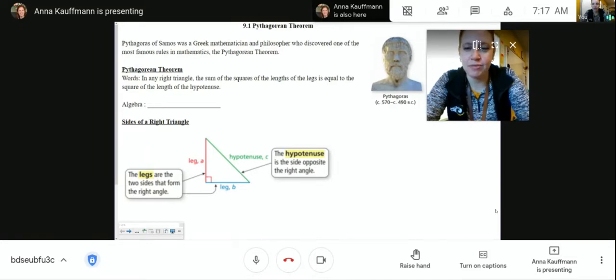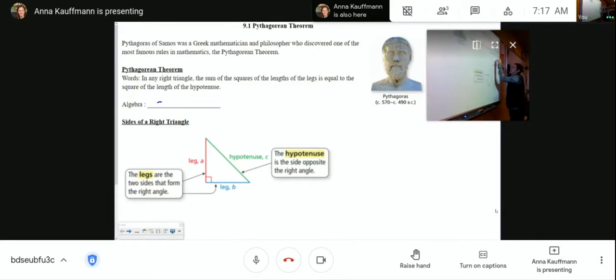The Pythagorean Theorem states, in any right triangle, the sum of the squares of the lengths of the legs is equal to the square of the length of the hypotenuse. Algebraically stated: A squared plus B squared equals C squared.